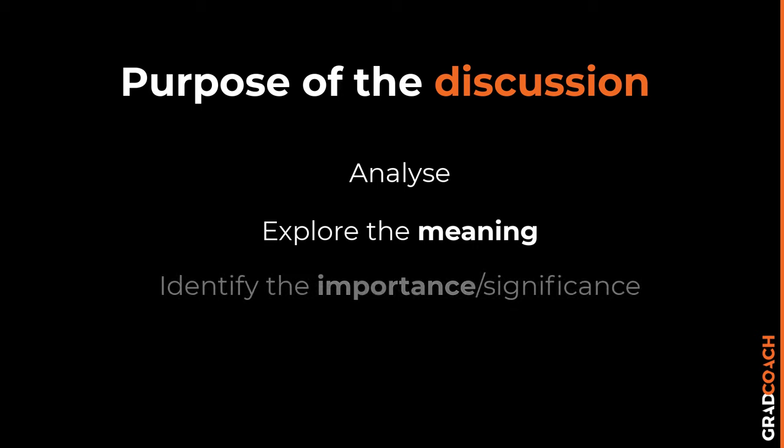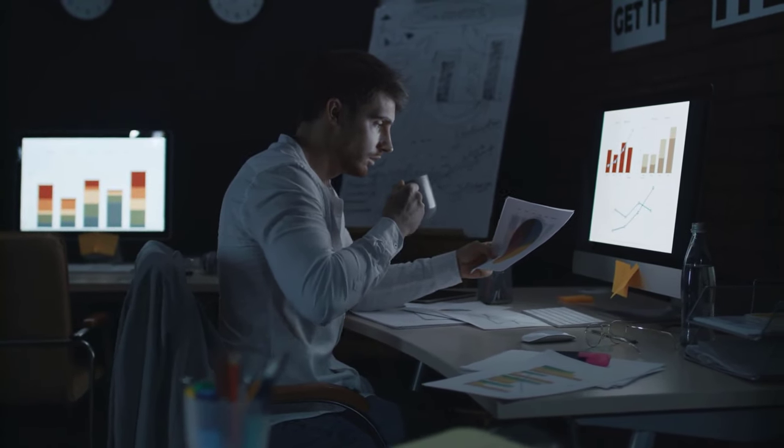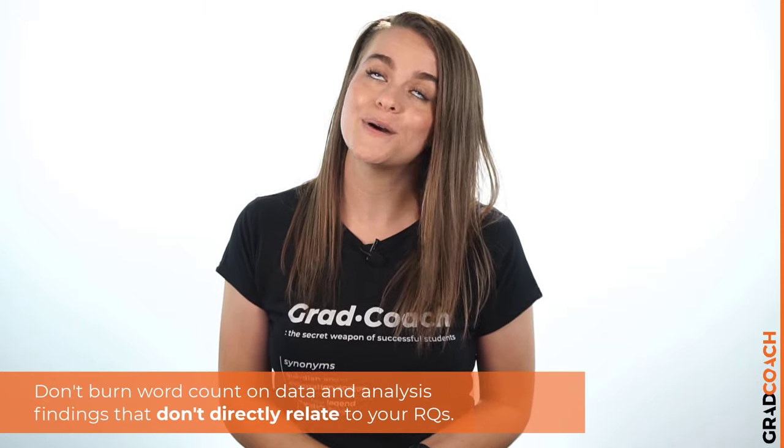Your discussion chapter needs to analyze, explore the meaning of, and identify the importance of the data you presented in your results chapter. In practical terms, this means the chapter should focus on findings directly related to your research aims and research questions — the core contents should directly address the research problem you have set out to solve. Nothing more, nothing less. Do not waste precious time and word count on findings that are not central to the purpose of your study. If you are not sure whether to include or exclude a particular point, ask yourself whether it directly relates to the research aims or not.